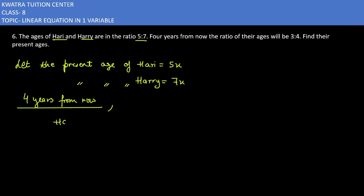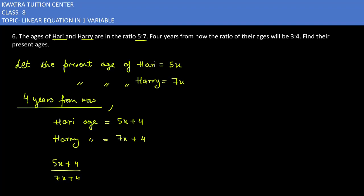4 years from now, what will be Hari's age? Hari's age will be 5x plus 4. But Hari's age — what will it be? It would be 7x plus 4. Now, they have given that the ratio of their ages will be 3:4. 3 ratio 4 means: 5x plus 4 over 7x plus 4 is equal to 3 by 4.